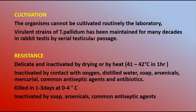One such virulent strain is the Nichols strain, which was isolated from the brain of a fatal case of general paralysis of the insane in 1912. From then up to now, it has been continued by serial testicular passage and is used for diagnostic and research purposes.